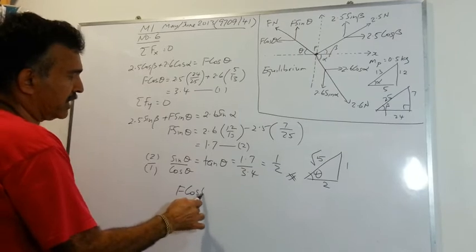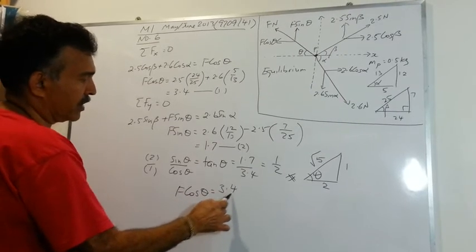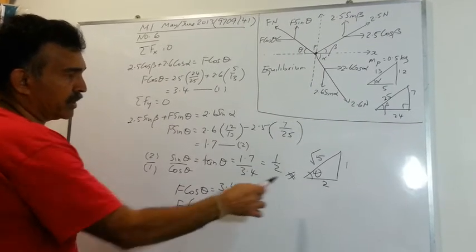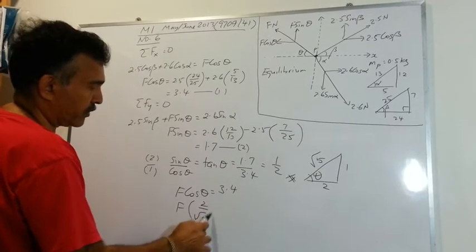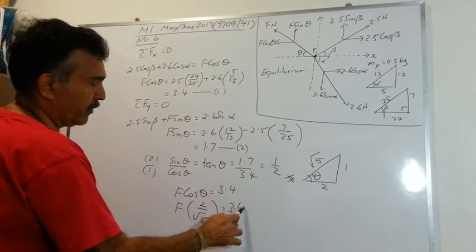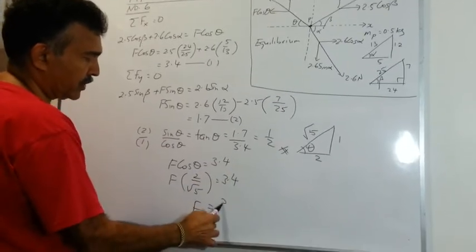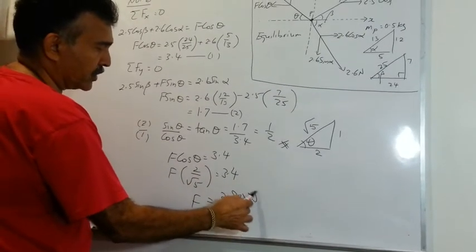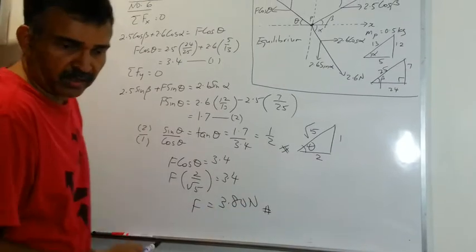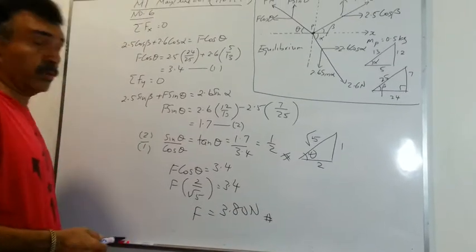Use one of the equations: F cos theta equals to 3.4. So you can write F times, what is cos theta? 2 over square root 5 equals 3.4. Use a calculator. You will get the value of F as equals to 3.80 newton.